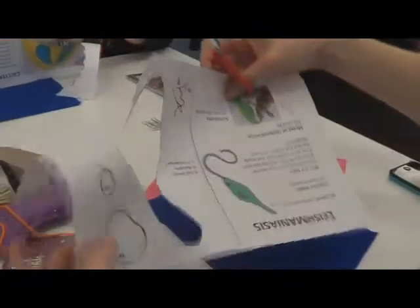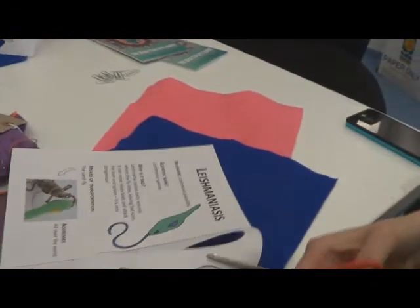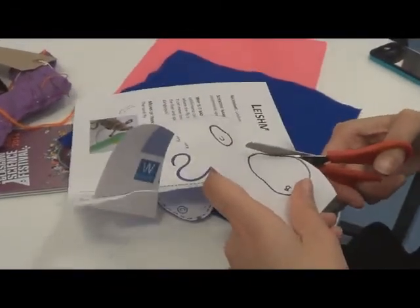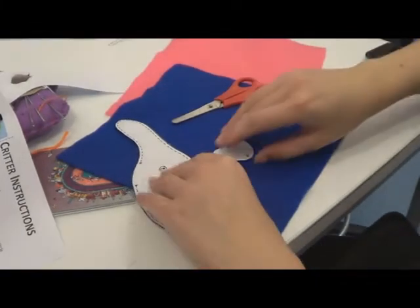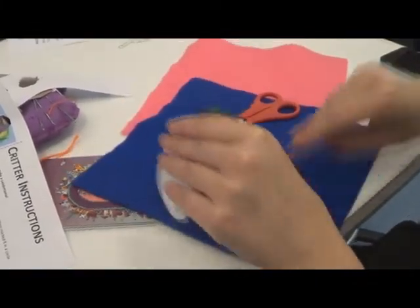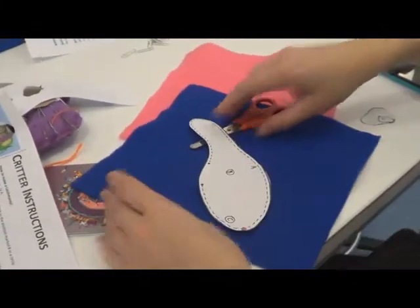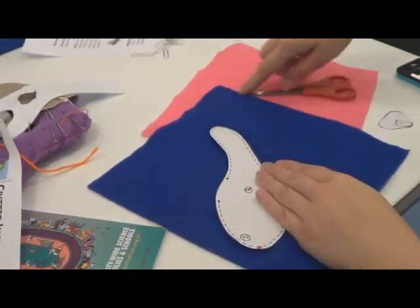Did I cut out these bits as well? Yes, the nucleus and the kinetoplast. So now what I want you to do is to draw on the felt. Yeah, the parasites and then the organs. Draw around this? Yeah, draw around.